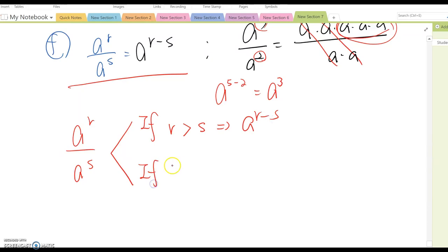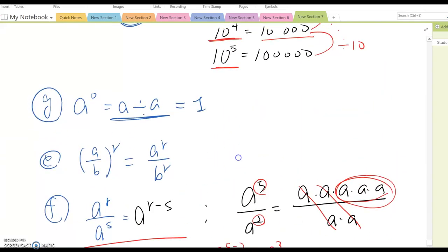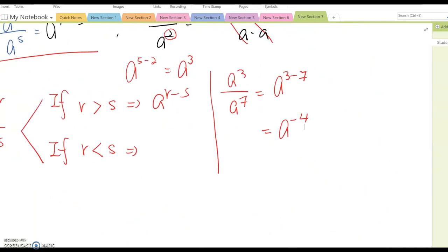Then, what if R is less than S? Then, this becomes, I am going to show the example first. A cubed over A to the seven here. Then, as you see, this becomes A to the 3 minus 7 here. So, it becomes A to the negative 4. Using property D, then you will rewrite this. 1 over A to the fourth power.